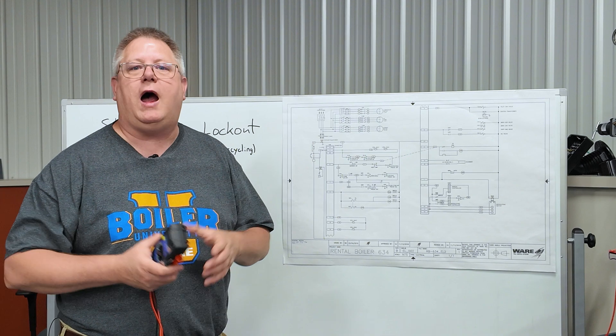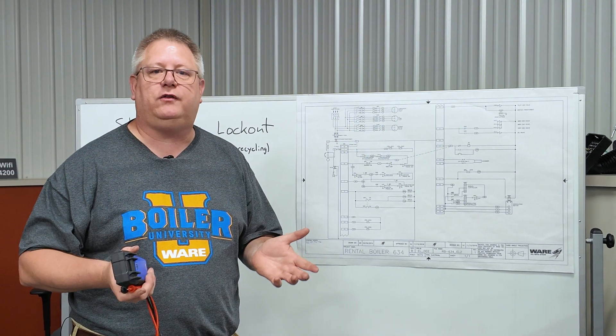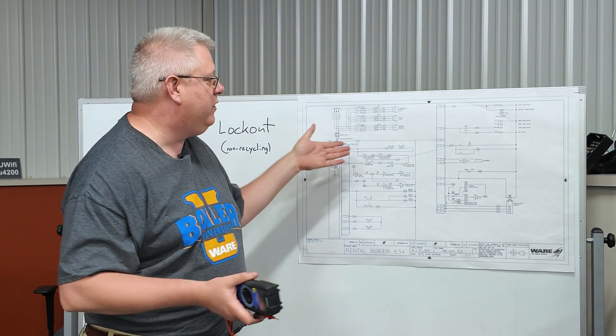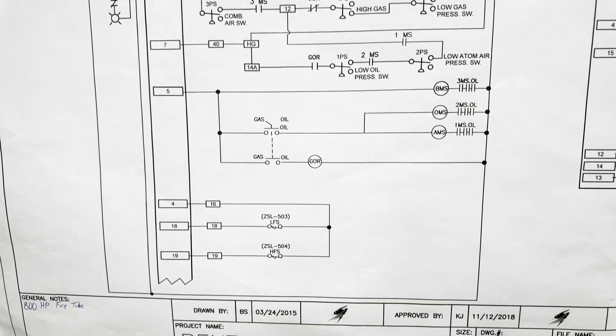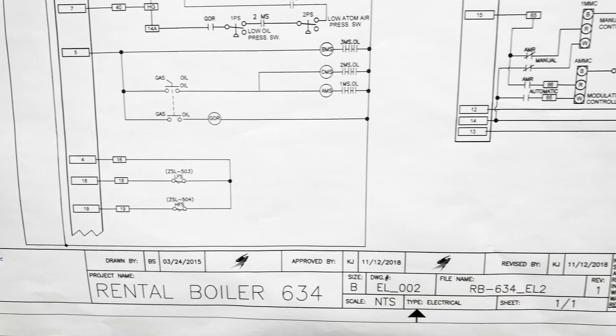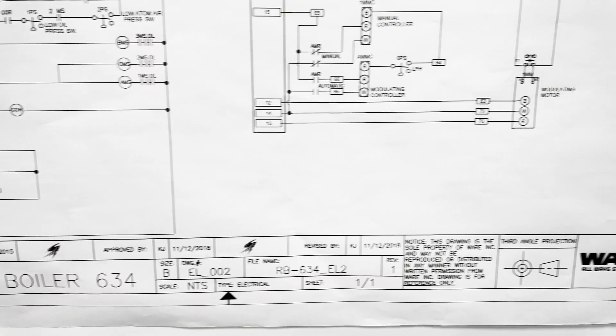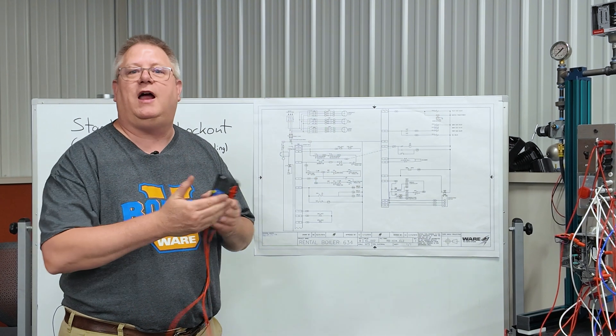So a troubleshooting event where I don't have a print, I could spend two hours identifying a switch that's got me held out. With a drawing that matches the panel that's current, I may be able to find which switch is holding you out in two minutes. So it's a night and day difference.